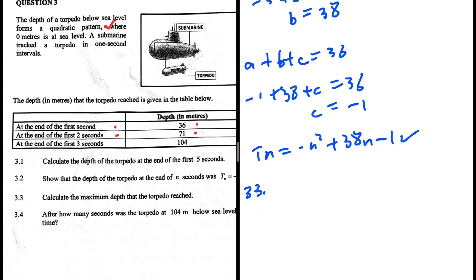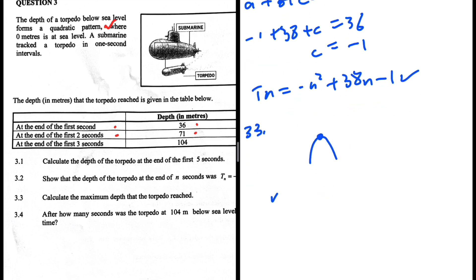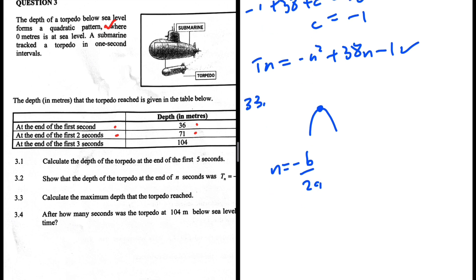3.3: Calculate the maximum depth that the object reached. Our quadratic pattern is concave down, so the maximum will be at x equals minus b over 2a. So n equals minus b over 2a.